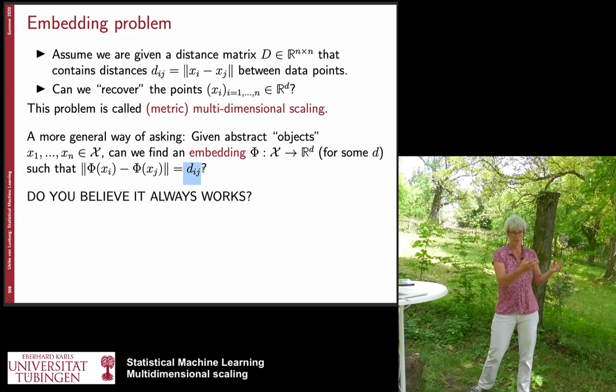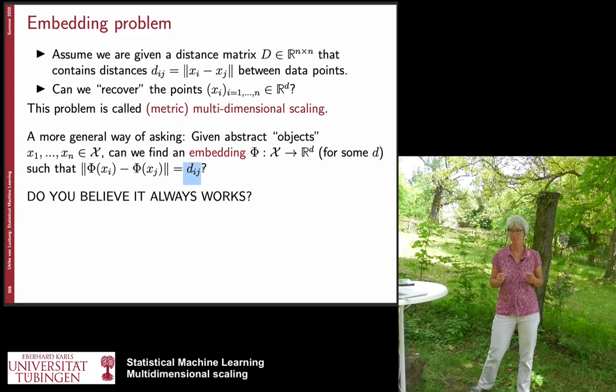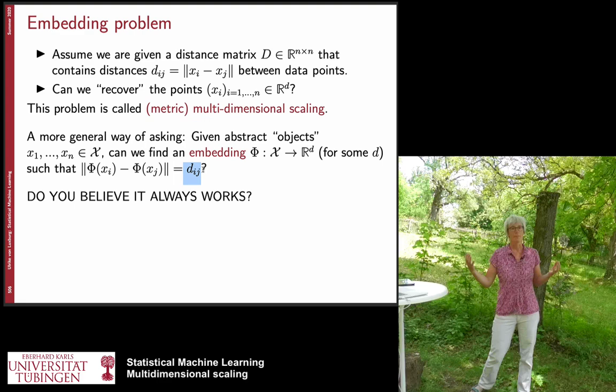An embedding problem always means we are given certain objects and want to embed them into a space, ideally keeping certain properties fixed. In this particular case, we want to solve the embedding problem of preserving the distances. Now here's a question for you: do you think this problem always has a solution? If yes, does it have a unique solution? If no, why not? Please switch off the video for a moment and consider whether this problem always has a solution.